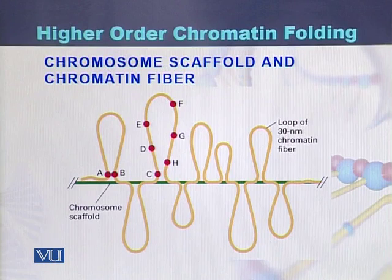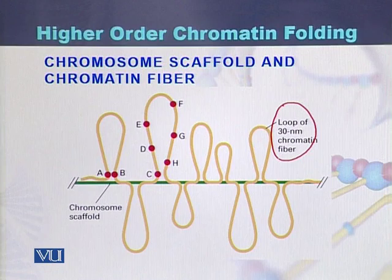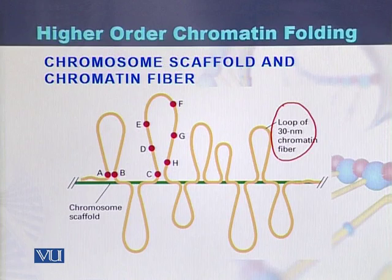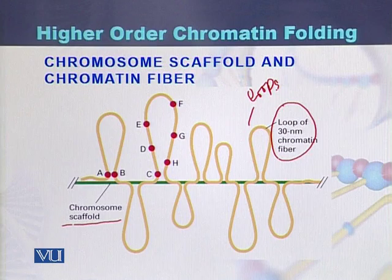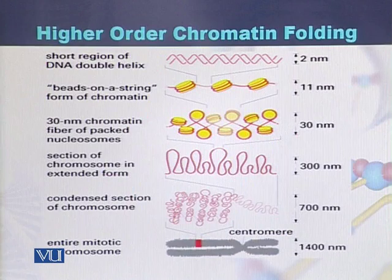Once the 30 nanometer chromatin fiber is produced — formed by joining the nucleosomes with each other — that chromatin fiber forms the chromosome scaffolds. They join with each other and there are loops of this chromatin fiber, called chromosome scaffolds. This is the second level of packaging.